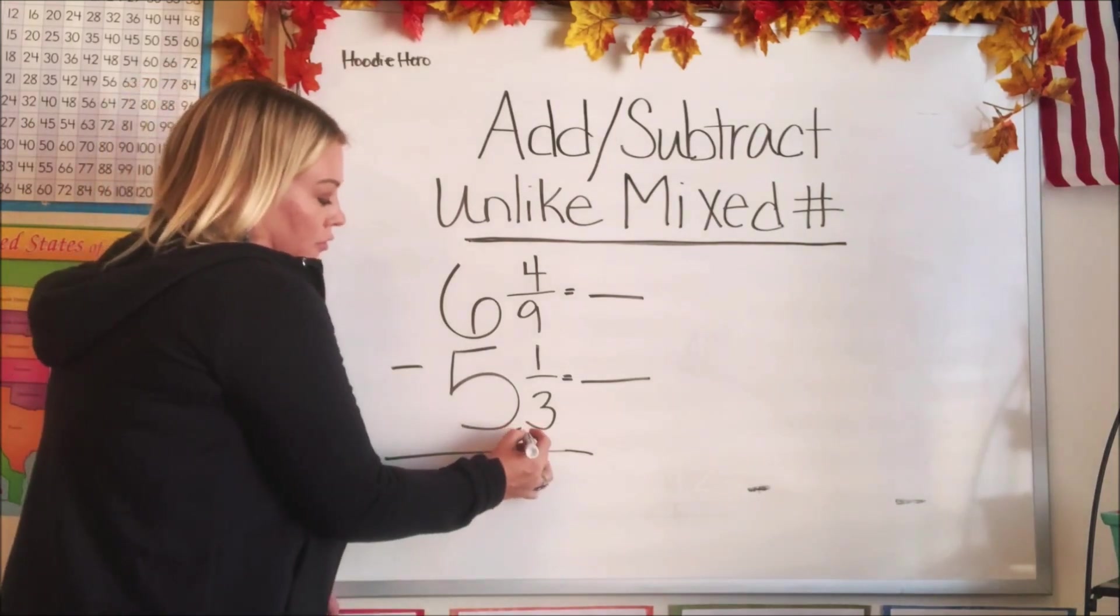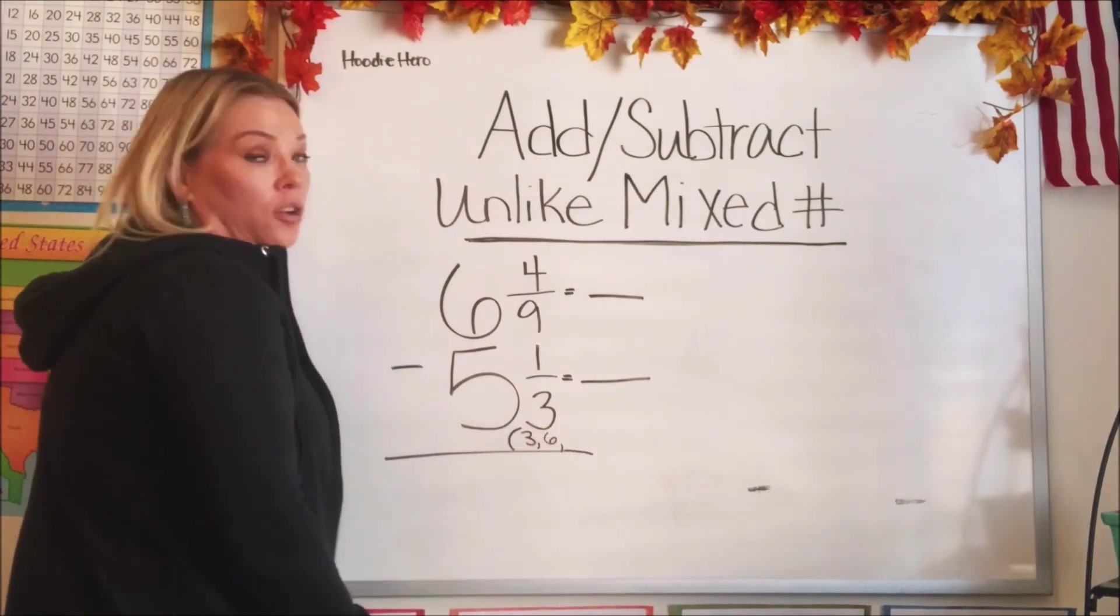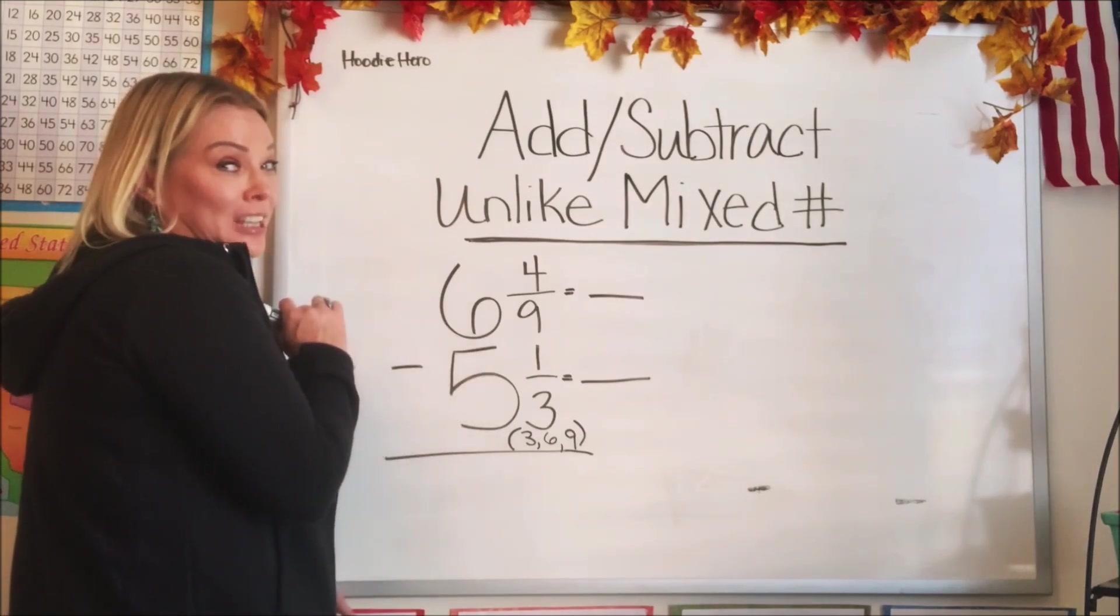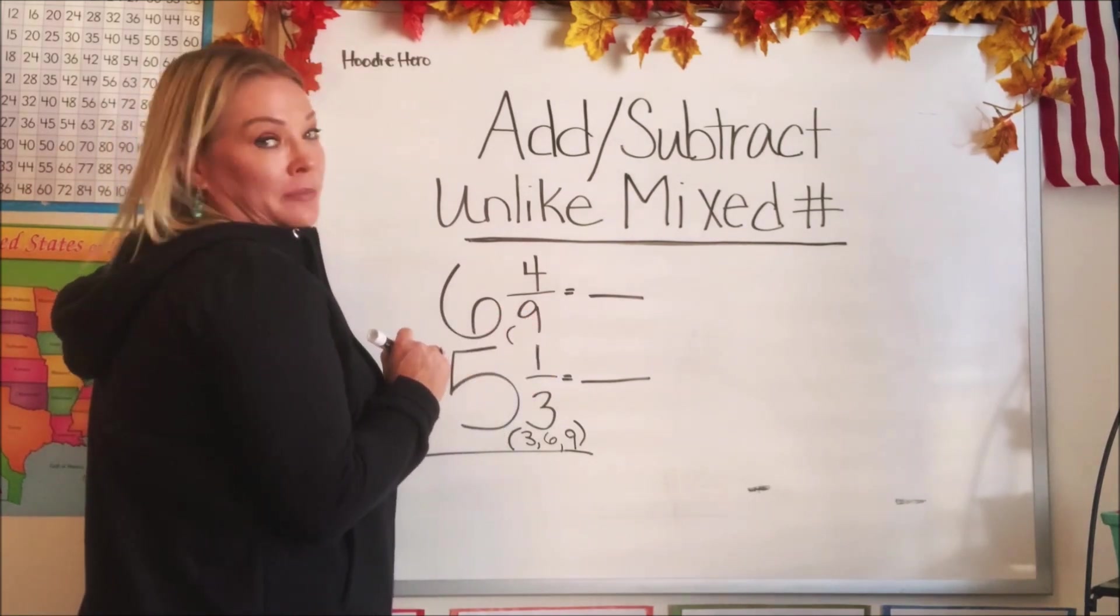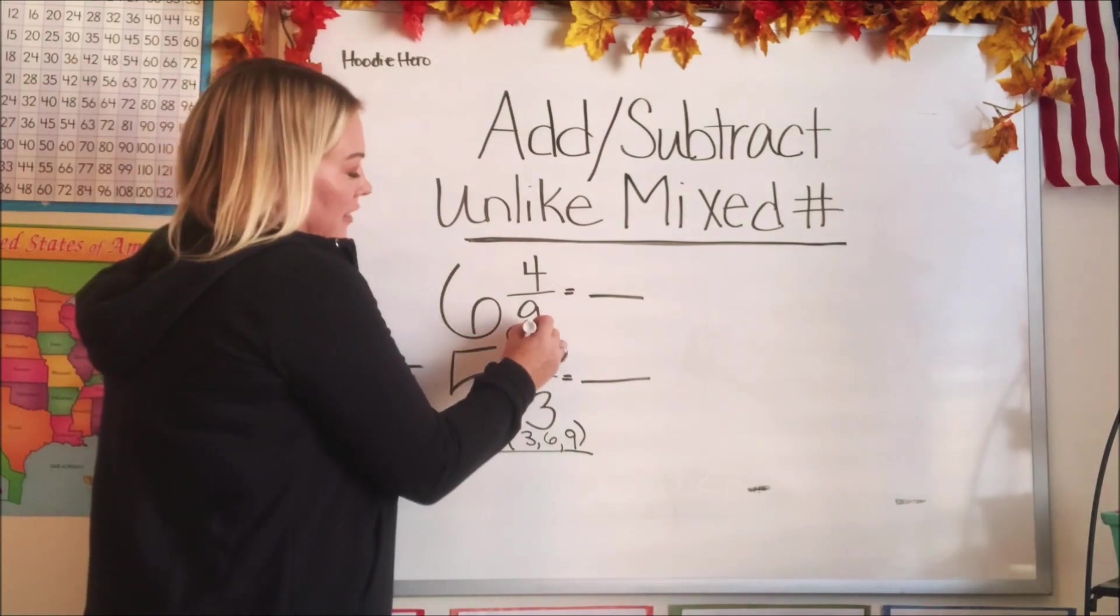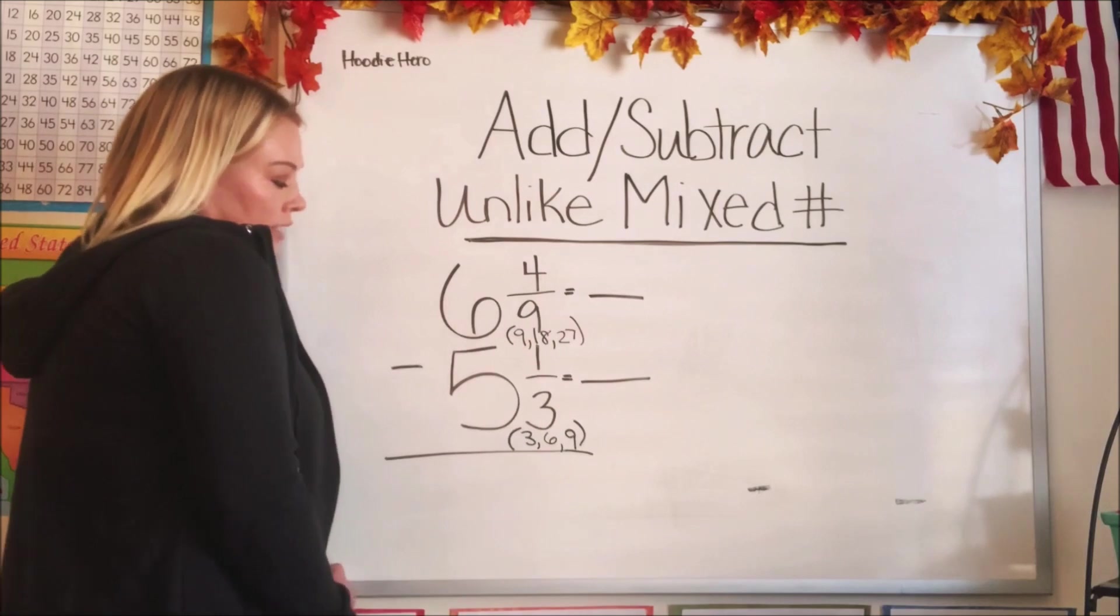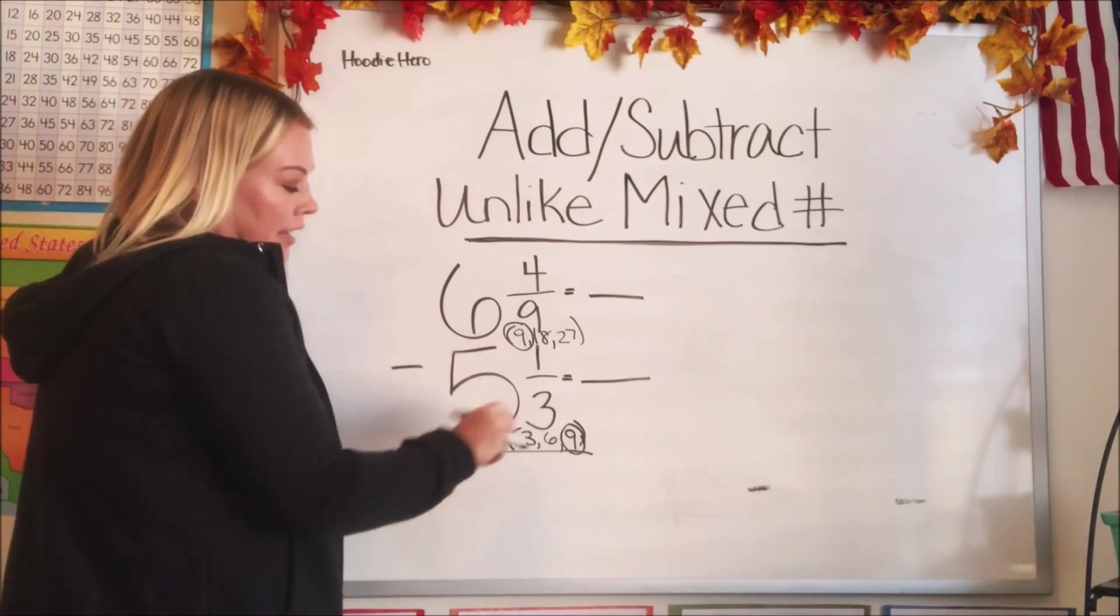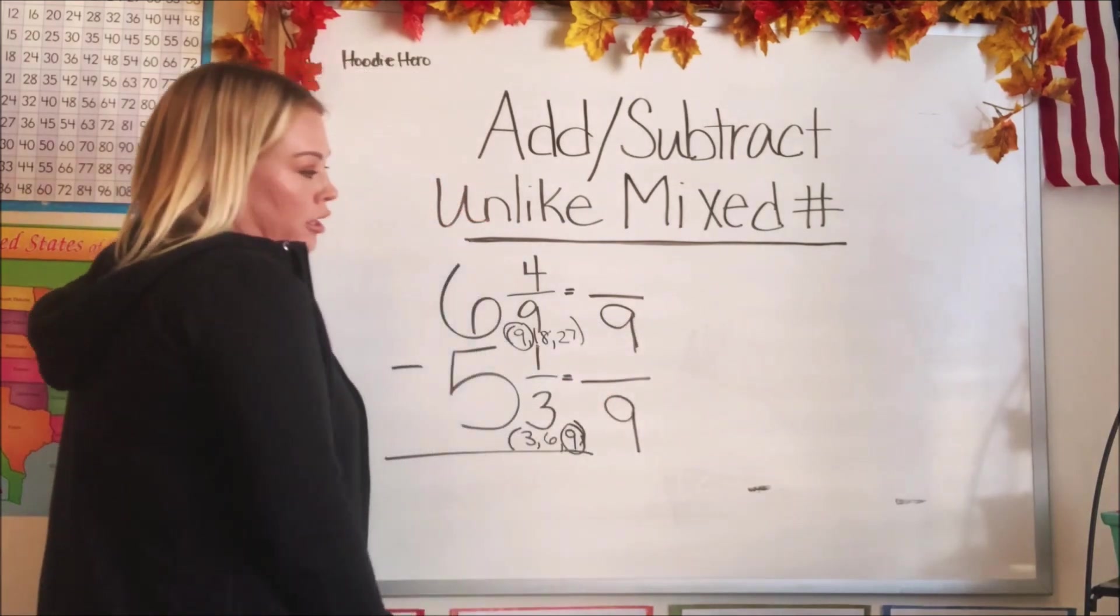Let's start with the 3. What's 1 times 3? 3. What's 2 times 3? 6. What's 3 times 3? 9. Let's just do 3. Let's do the 9. Multiples of 9. What's 1 times 9? It's 9. What's 2 times 9? 18. And what's 3 times 9? 27. Did the light bulb go off for you yet? Do you see the common multiple? Yes. 9. Let's go ahead and put the common multiple as our new denominator which is 9.